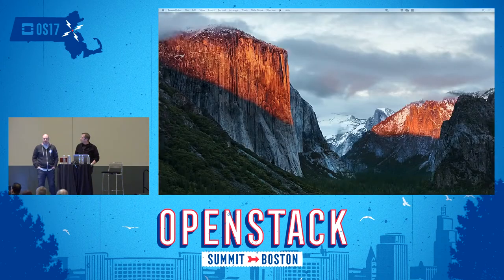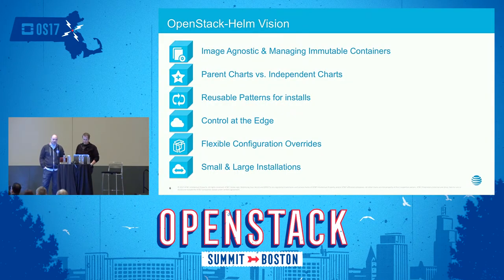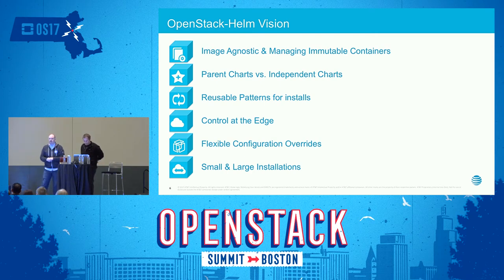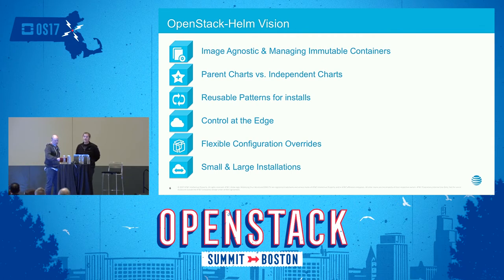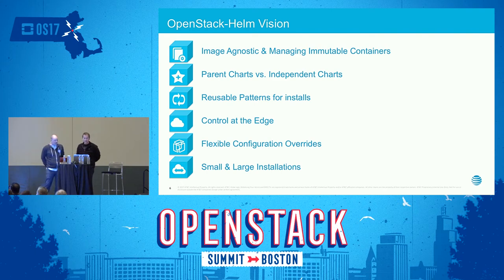The most important thing is being agnostic — it's a goal to be image agnostic. At AT&T we have a customized OpenStack deployment, and whether it's Kolla or Loki or building our own images, we can use tools from the Kolla community. We also want to provide a framework with independent OpenStack service charts, so if you only want Keystone, or Keystone plus Cinder and Neutron, you don't need to pull in the full stack.